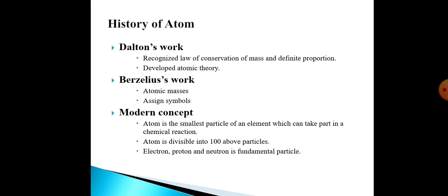Dalton also developed atomic theory, which says that all matter is composed of atoms of different elements, and matter differs from one substance to another because elements differ from one another and impart their properties to matter. Berzelius determined atomic masses of elements, and his determined atomic masses are more accurate and are still used in literature. Berzelius also assigned symbols to elements, making it convenient to write chemical formulas and chemical equations.